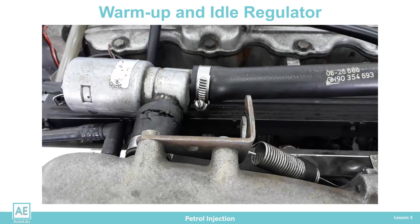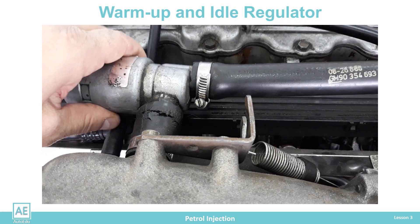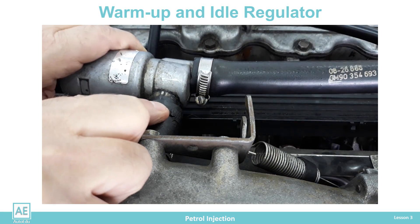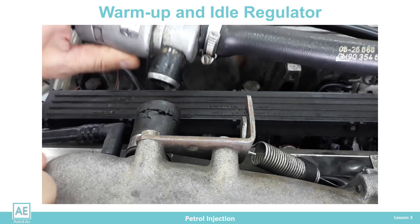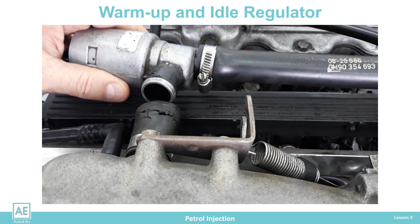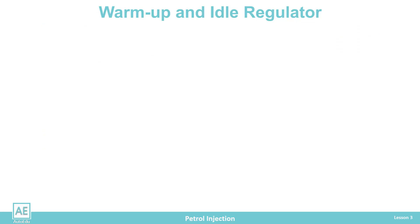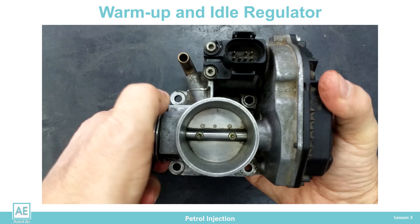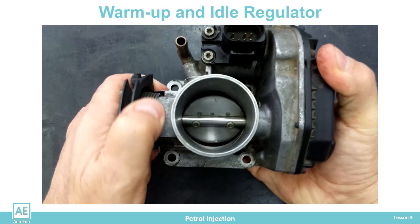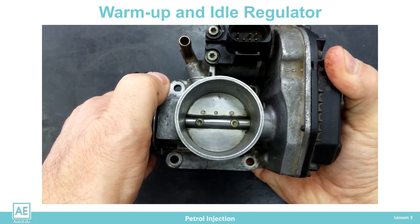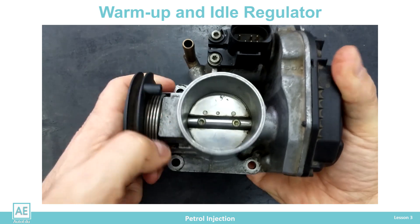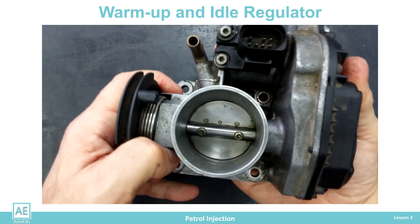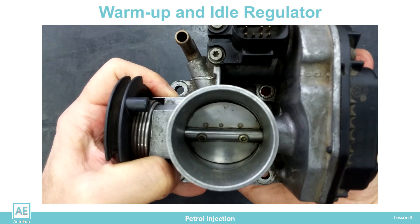The new solution is the regulation of engine speed at idle speed without a bypass line. In this type, there is no solid connection between the gas pedal and the throttle valve, but the movement is done via a spring on the throttle shaft.